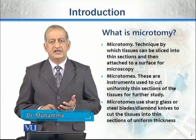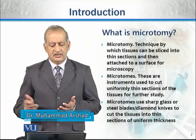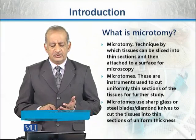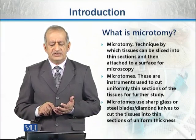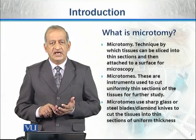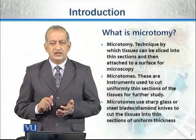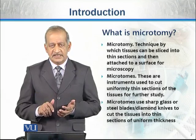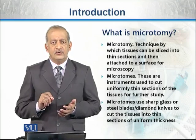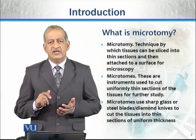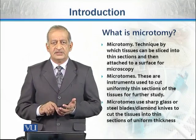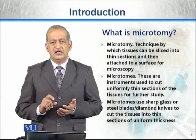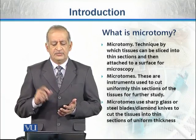They can then be studied under a microscope or even in an electron microscope. Microtomes are instruments which are used to slice or cut various tissues into uniformly thin sections. When we say uniformly thin sections, it means we are able to cut sections from nanometers to micrometers in thickness.